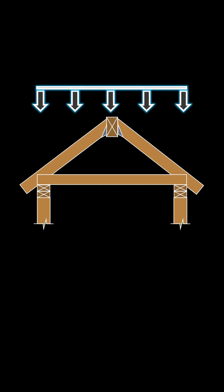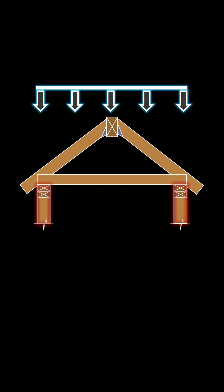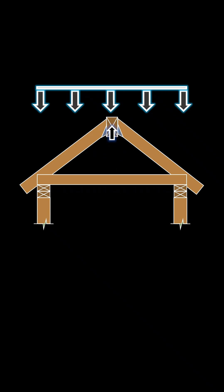For cases where gable roofs are framed with ridge beams rather than ridge boards, the vertical loads from each rafter are resisted at the bearing wall and at the ridge. Ridge beams are designed to carry vertical loads and transfer them to posts that are designed to support this load. For gable roofs with ridge beams, we do not have the horizontal reaction at the ridge because the ridge beam is offering vertical support. We now have a vertical reaction at the ridge and at the base of the rafter, which satisfies equilibrium.